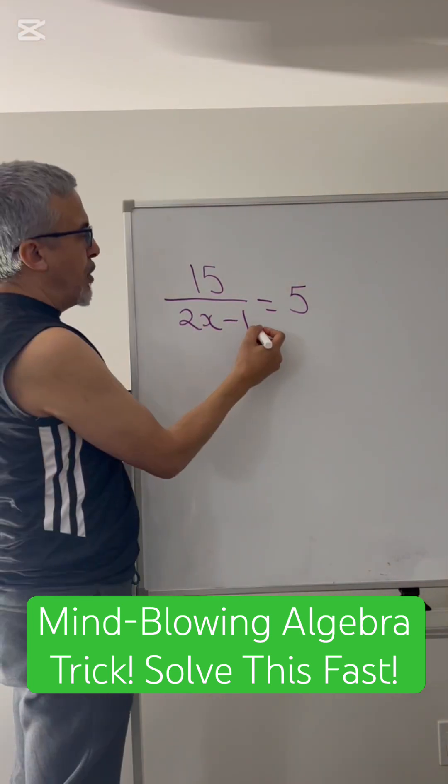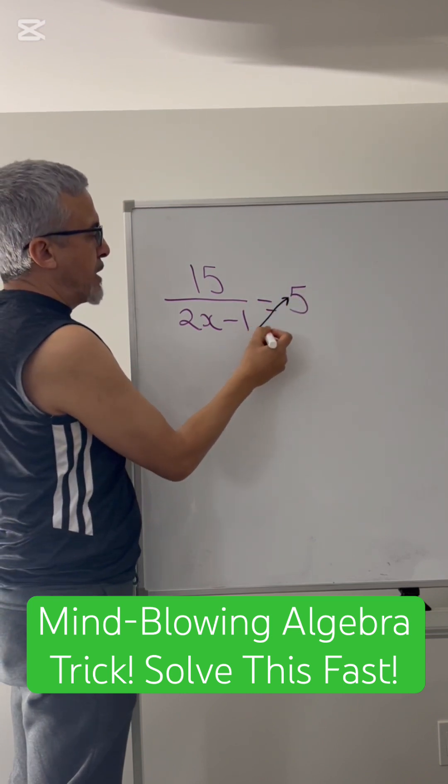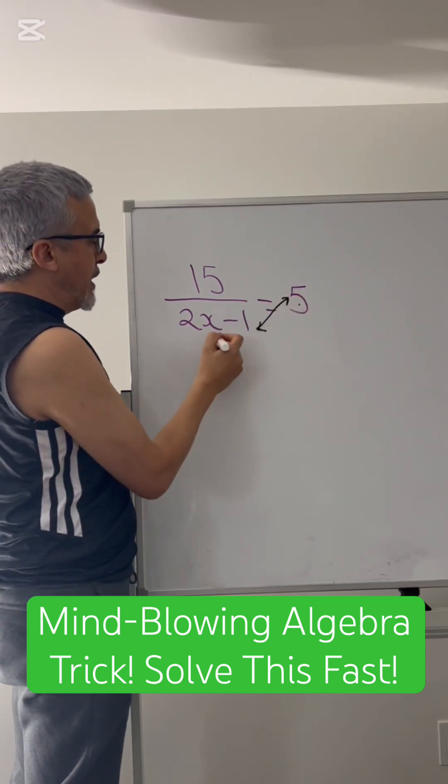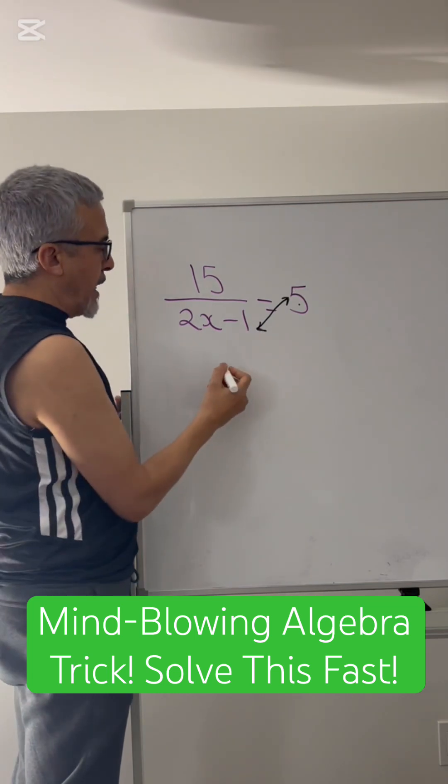The first way: cross multiply or cross exchange. So the 5 comes here and the 2x minus 1 goes there. And that's allowed in algebra.